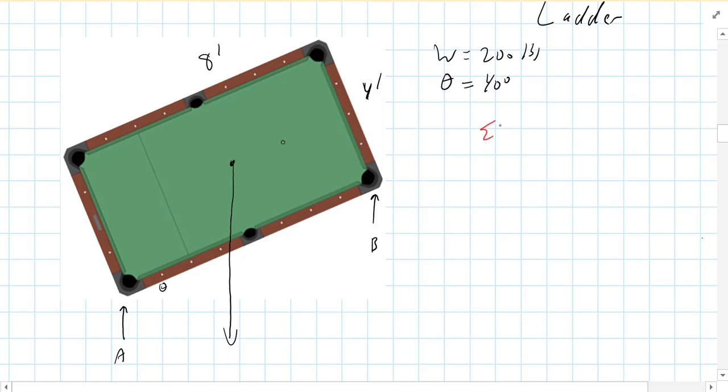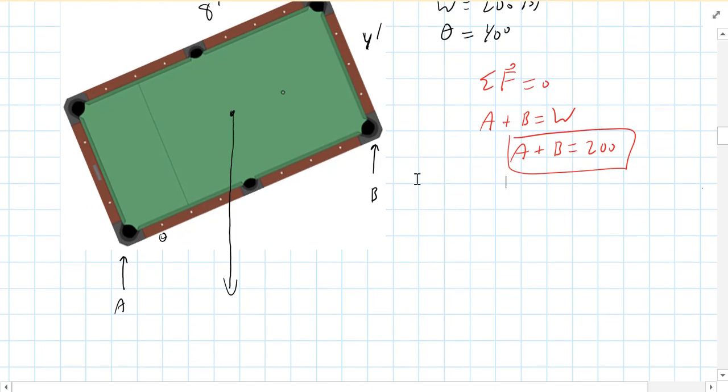So how do we do this? Well, we're going to start with net force equals zero. This is easy, right? A plus B is going to have to equal the weight, which is 200. So A plus B is equal to 200 pounds. Well, duh, right? So that's easy enough. The question is how much of that is A and how much of that is B.